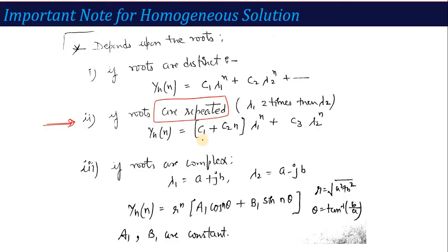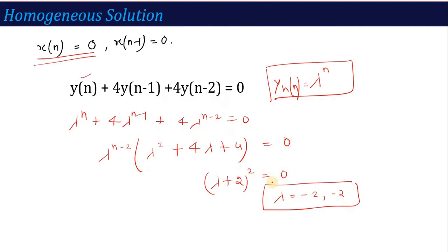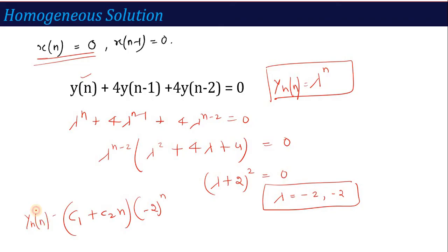For repeated roots, the homogeneous solution is y_h[n] = (C₁ + C₂·n)·(−2)ⁿ. This is the homogeneous solution for the given difference equation.